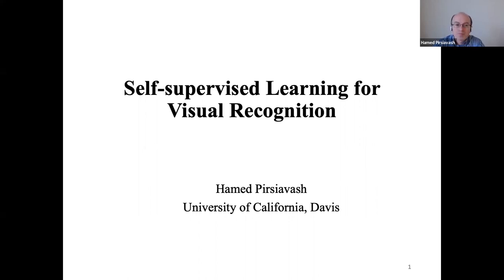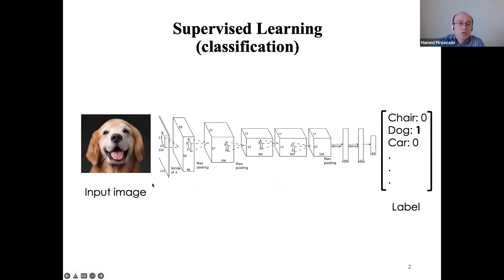I'm sure most of you are familiar with supervised learning or deep learning in general. The idea is you have a bunch of images — I'm mainly working on visual recognition but similar ideas apply to other domains. Given an image and a deep model, we want to train the model so that it predicts a particular output label. In this case the output is a vector of length 1000, where each dimension corresponds to one category. For a dog image, we train the model — AlexNet in this case — to produce a one at the dimension corresponding to dog and zero everywhere else.